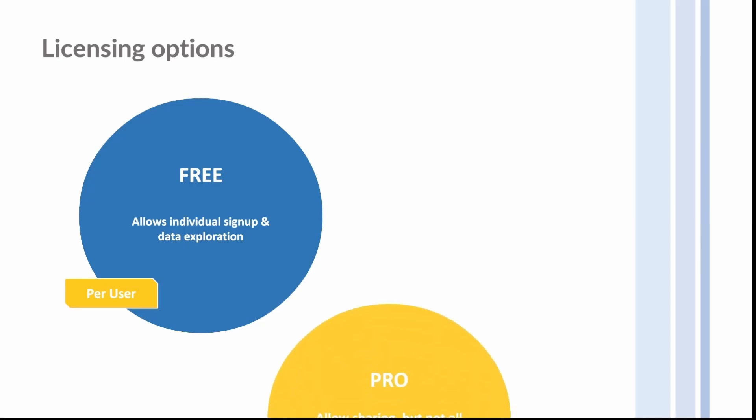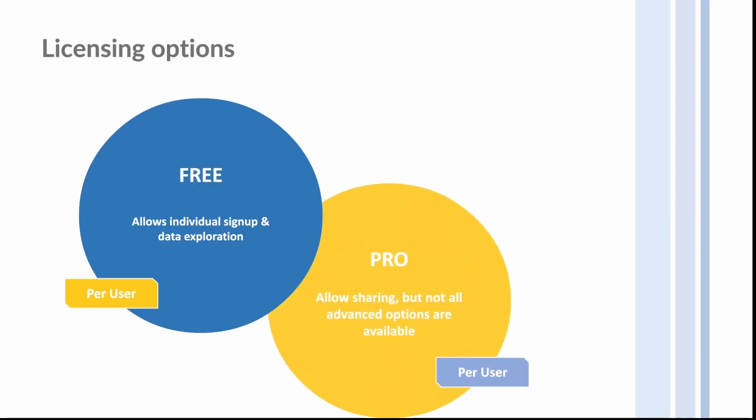The free tier allows you to create reports in Power BI Desktop or the service and publish them to your own workspace. If you want to collaborate with others you need a pro license, which allows you to create a dedicated shared workspace for your team or a specific project. You can share reports through links, but the receiver will also need a pro license to view and edit the report because it's in a non-personal workspace.